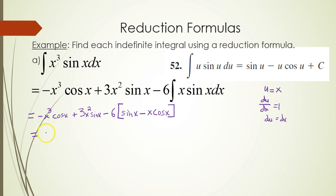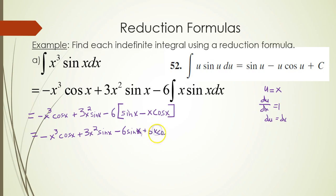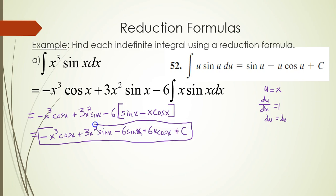Putting it all together, we now have negative x cubed cosine x, plus 3x squared sine x. Distributing the minus 6 gives minus 6 sine x, and then plus 6x cosine x. Since this is the final answer and it's an indefinite integral, don't forget the constant of integration, plus C. There are other integration methods that would also allow you to integrate x cubed sine x, but this is how to use the reduction formulas from the integration table.